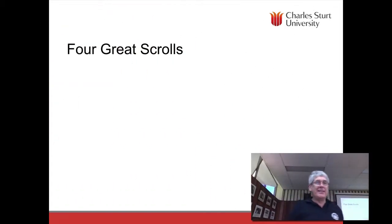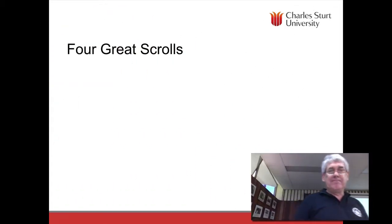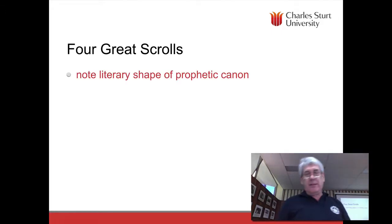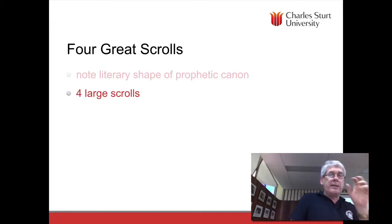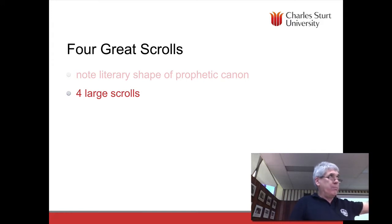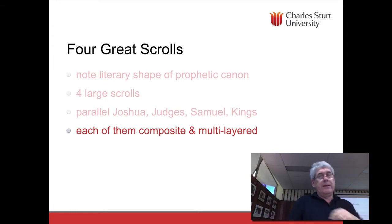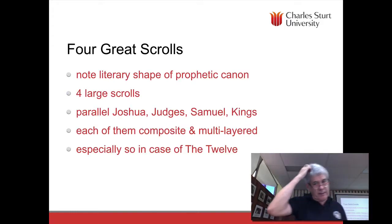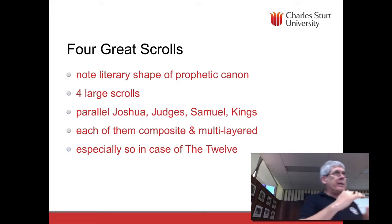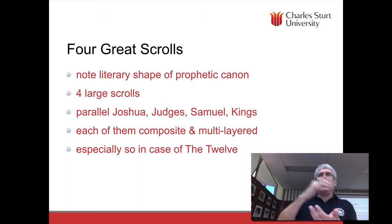Moving on to the world within the text: we've got the four great scrolls — Isaiah, Jeremiah, Ezekiel, and the Twelve. We can see the way the prophetic canon is being shaped up. There are four major books in the former prophets and four major books in the latter prophets. Each of them is perhaps best understood as being like a literary equivalent of an archaeology tell.